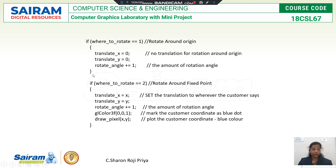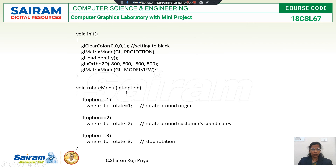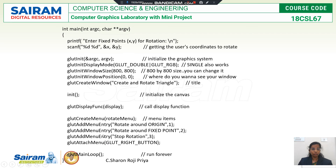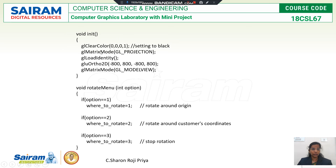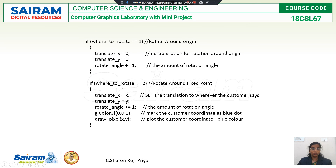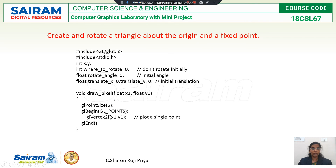We have completed the whereToRotate function. The third menu option stops the rotation. The glutMainLoop runs the program forever. So this covers triangle rotation about the origin and about the fixed point. We have discussed main, init, the rotate menu callback, the whereToRotate functions, the triangle function, and the display function. Thank you.